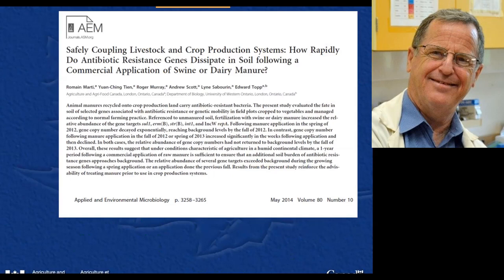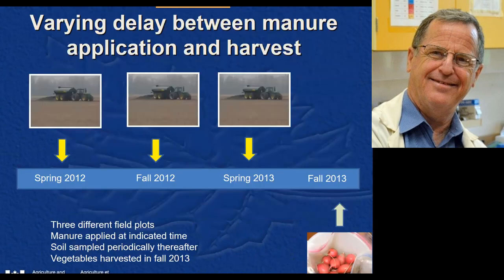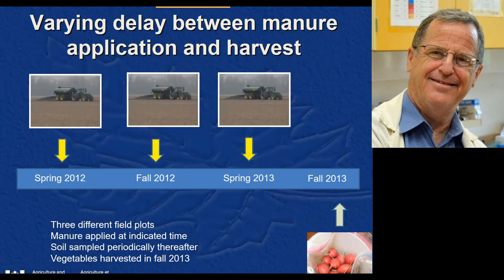The first dataset was published in 2014, involving field-scale experiments. We asked three timing questions: first, we harvested vegetables in fall 2013 from ground that received manure in spring 2013 — same-season application and harvest. Second, we applied manure to a different field plot in fall 2012 and looked at what we were recovering in fall 2013 — roughly a year between application and harvest. Third, we applied manure in spring 2012, well before the 2013 harvest — trying to understand the window of persistence of these genes applied with the manure.